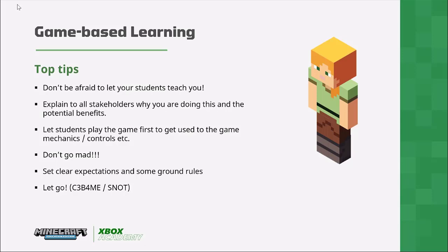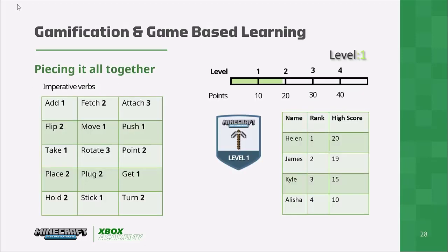Encourage independent learning. I've used strategies like 'C3 before me' — see three other people before asking the teacher. And remember, you can put all of these strategies together. I talked about the idea of having students do an instructional writing task about something they've created in Minecraft. You can combine that with gamification — add points to different words they use, like imperative verbs: 'attach' gets three points, 'flip' gets two points, 'get' gets one point. Then create a leaderboard for the whole class, or use ghost mode where they try to beat their previous score, and use the progress indicator to show how close they are to the next level.